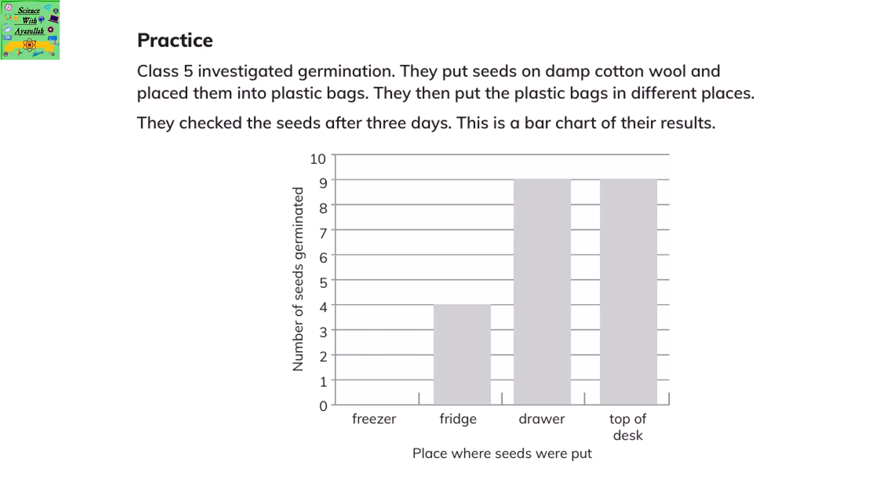Class 5 investigated germination. They put seeds on damp cotton wool and placed them into plastic bags. Then they put the plastic bags in different places and checked the seeds after 3 days. This is a bar chart of their results.